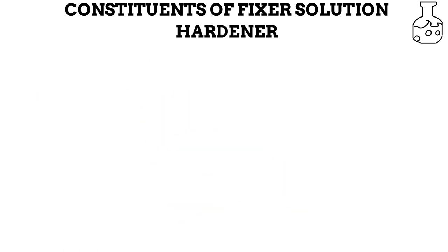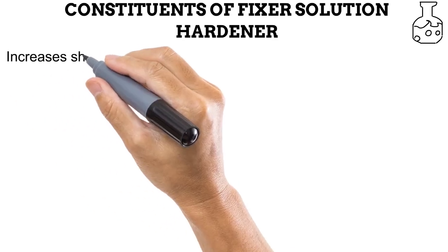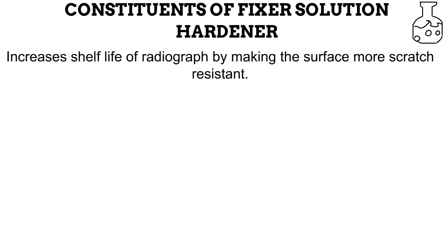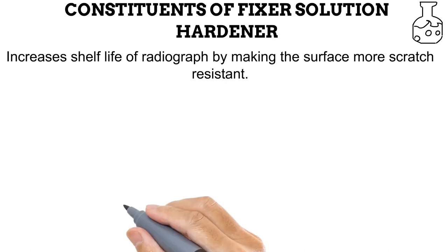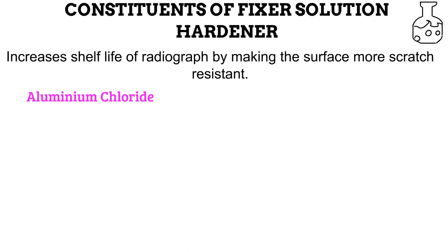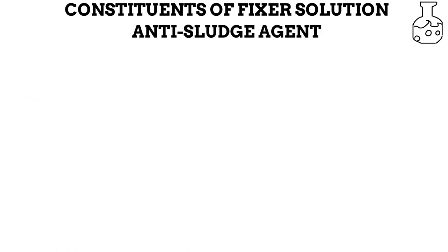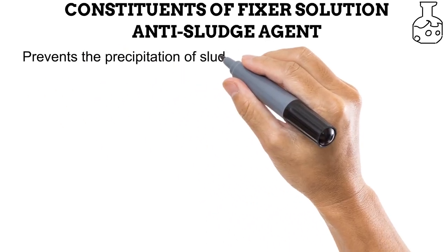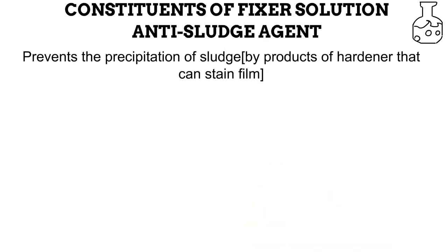Next is the hardener. Hardening needs to continue in the fixer solution, because a hardened radiographic film is more resistant to scratches and fracture, increasing its archival permanence — commonly referred to as shelf life. While the hardener in the developer solution is glutaraldehyde, in the fixer solution, aluminum chloride is the hardener used. The final constituent of the fixer solution is the anti-sludge agent. The hardener in the fixer solution produces a byproduct called sludge, which has a tendency to stain the x-ray film, degrading its quality. Boric acid prevents formation of this sludge.